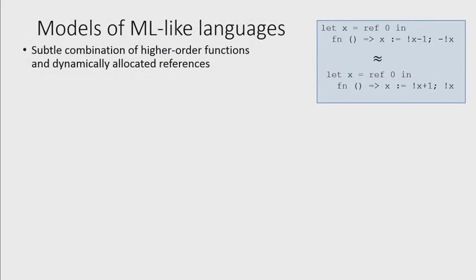So the second thing I want to talk about is models of ML-like languages. So the same technology, but used for something different. So ML has higher order functions and dynamically allocated local references. And this is a tricky combination. Reasoning about programs in that language is actually quite hard. So here's a trivial example of the sort of thing that goes on. We've got two functions. So this computation assigns a new reference, gives you back a function which decrements the reference and then returns the negation of its contents. This one, new reference, gives you back a function which increments it and returns the contents. So these two things are contextually equivalent in ML because the reference X is hidden inside those two closures. Nobody else ever gets to see it. And the external behavior when you make calls to the two things is the same.